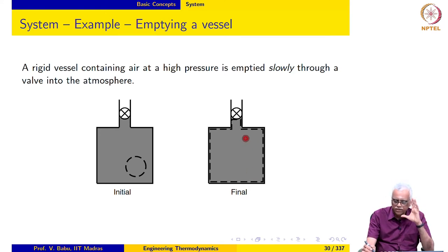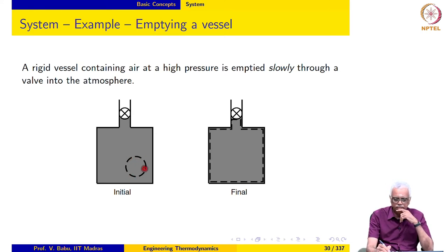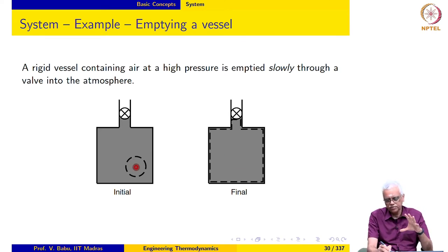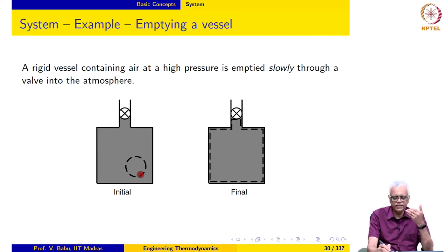This is the amount of air that finally remains in the vessel. Initially when the process begins, this would have been the air arranged like this. This amount of air, shown here, is our system. The amount of air within this boundary is what we focus on. As the process goes on, this air expands and eventually fills the whole vessel. We need to think the process through and define the system.